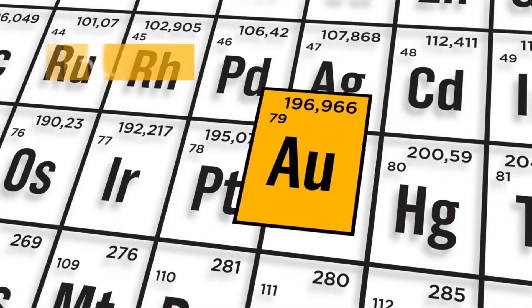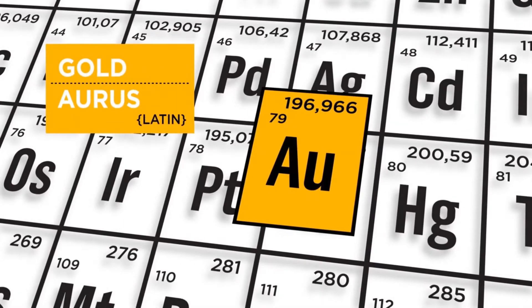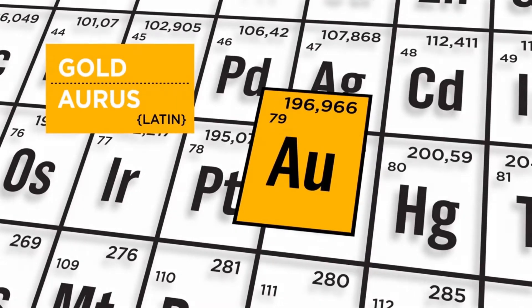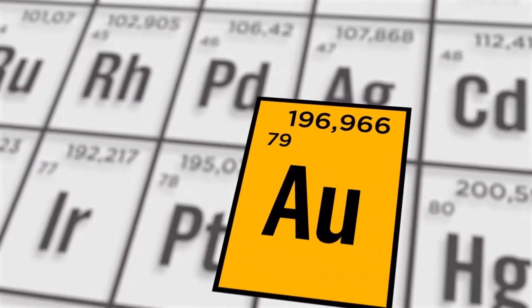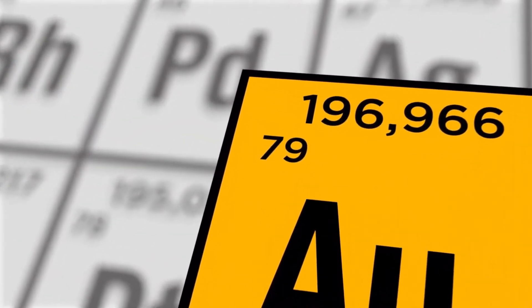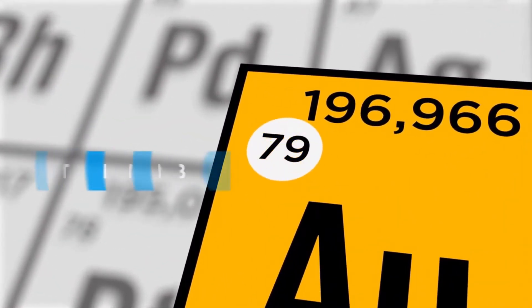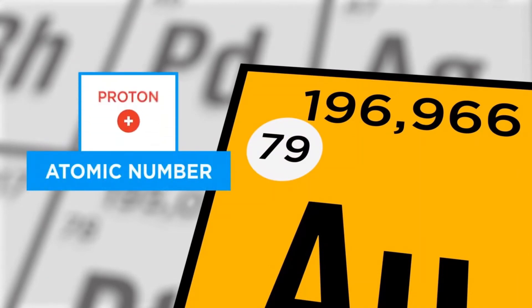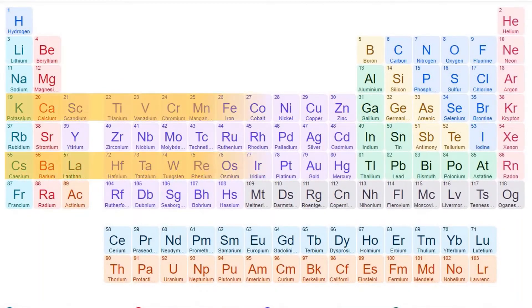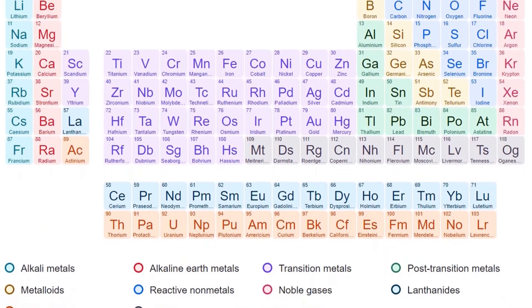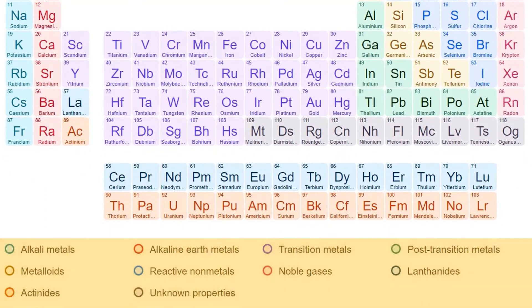In the periodic table, the elements are organized and displayed according to their atomic number. They are also arranged in rows and columns based on their shared chemical and physical properties.